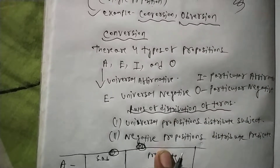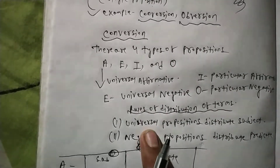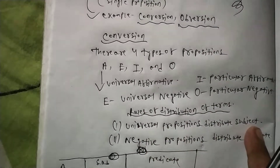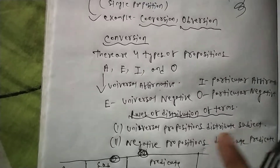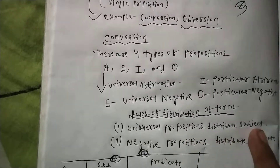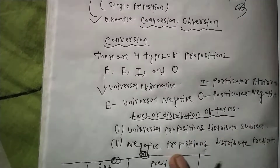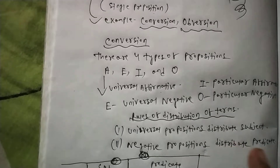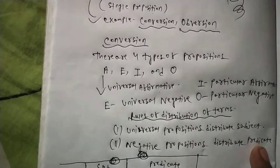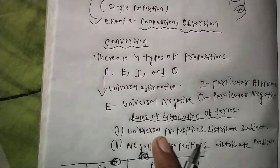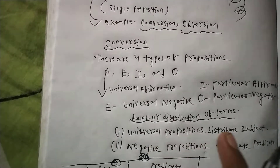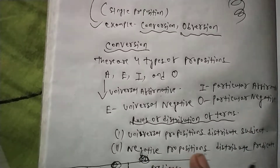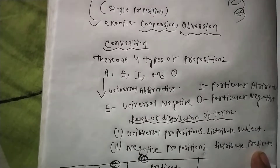What do we call rules of distribution of terms? Universal propositions distribute subject, and negative propositions distribute predicate.